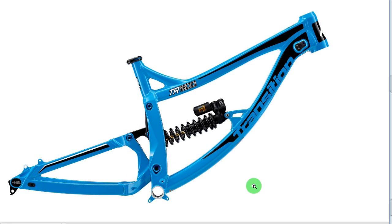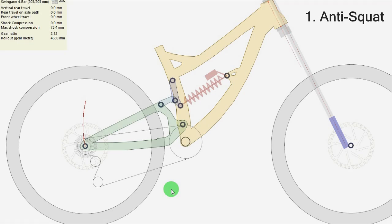So let's see the characteristics of the bike. If you watched my previous video about the anti-squat, you already know that in this type of bikes, the swing arm 4 bar bikes...